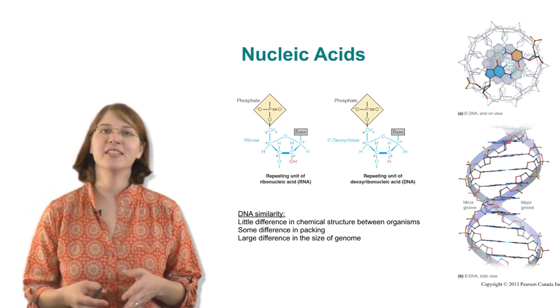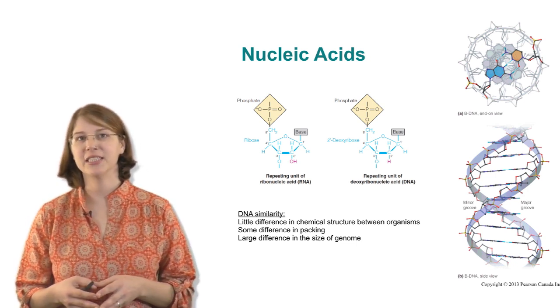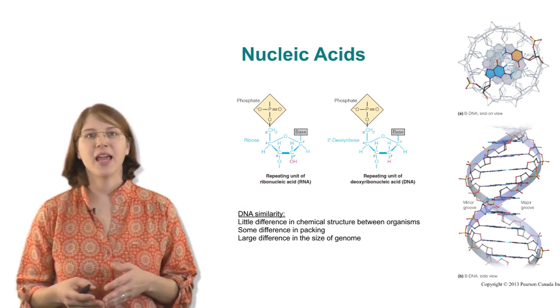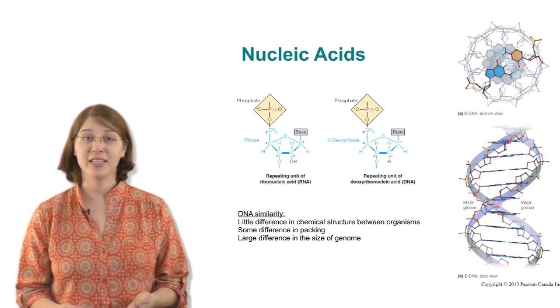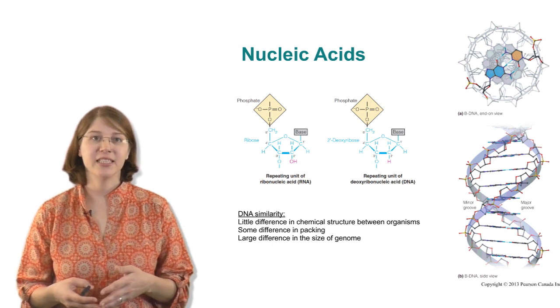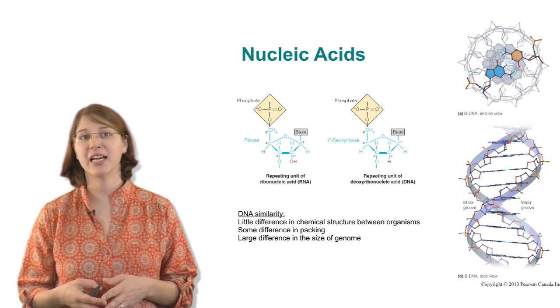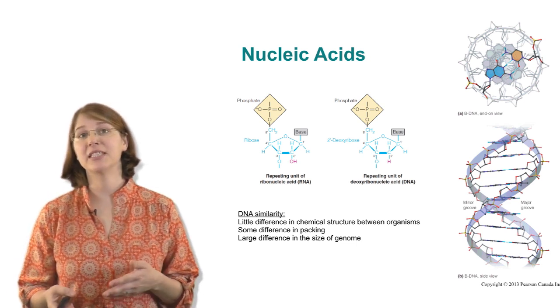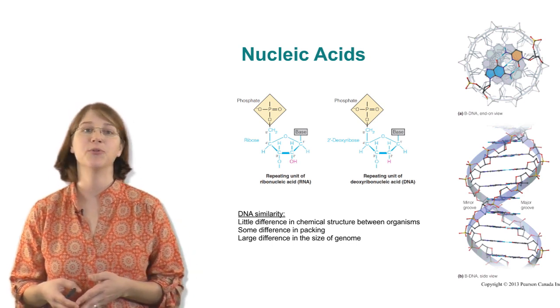The small chemical structures that you see here are very highly conserved between all nucleic acids. They're composed of a phosphate, a sugar, and a base. DNA forms into these secondary structures like the double helix, but RNA, ribonucleic acid, can form into a variety of other secondary structures, so there is some difference in nucleic acids and how they pack. But there's also a large difference in the size of the genomes of different organisms, so how many nucleic acids an organism will have.